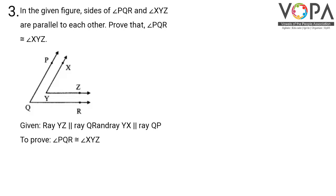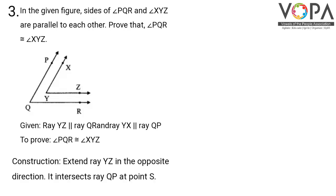In the given figure, the sides of angle PQR and angle XYZ are parallel to each other. Prove that angle PQR is congruent to angle XYZ. We are given that ray YZ is parallel to ray QR and ray YX is parallel to ray QP. We need to prove angle PQR is congruent to angle XYZ. For the construction, extend ray YZ in the opposite direction so that it intersects ray QP at point S.